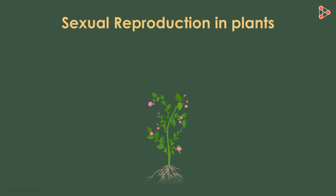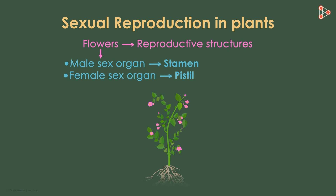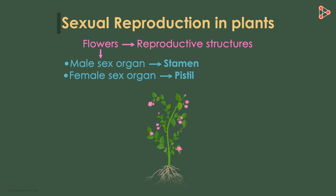Plants possess flowers. Flowers are the reproductive structure of the plant. In a flower, the male sex organ is called the stamen and the female sex organ is called the pistil. But how does this process of sexual reproduction occur? Let's try and understand it.